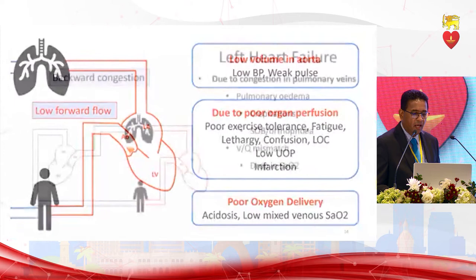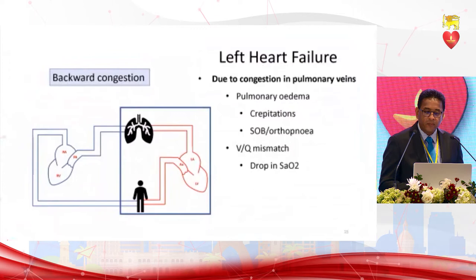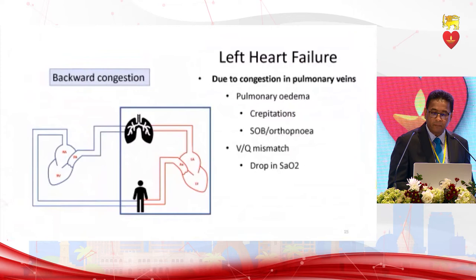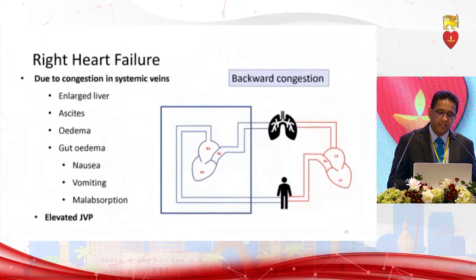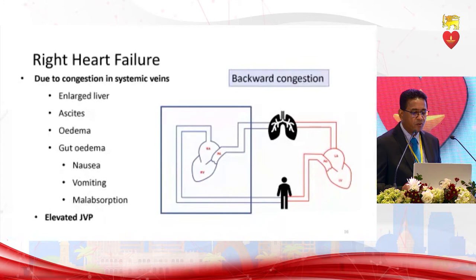In backward congestion, left heart failure causes pulmonary congestion — pulmonary edema, crepitations, shortness of breath, and VQ mismatch leading to drop in saturation. Right heart failure causes systemic venous congestion — enlarged liver, ascites, edema, gut edema, nausea, vomiting, malabsorption, and elevated JVP.